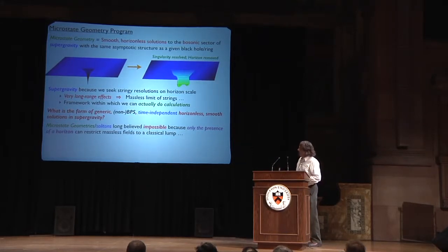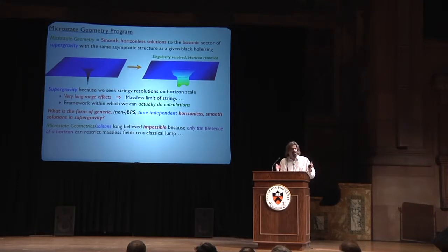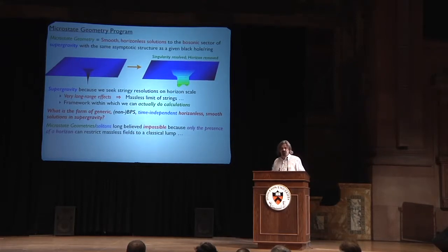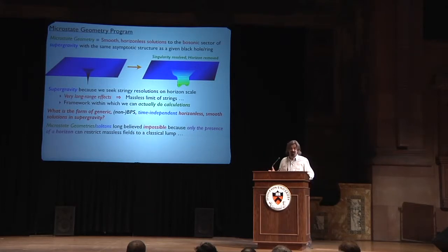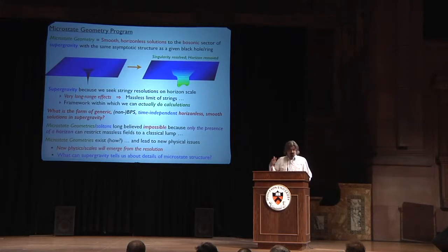And in particular, there were lots of theories out there saying microstate geometries or solitons should be impossible. And there's a very simple intuition. The intuition is, if you've got a massless field, the only thing that can hold that thing that's trying to travel at the speed of light into a classical lump is a horizon. It turns out that's wrong, and it's wrong in a very interesting way. And so, once you understand how and why microstate geometries exist, it can lead to follow-up questions, and that leads us to the two other scales of physics, and also what can supergravity within that approximation tell us about microstate structure?